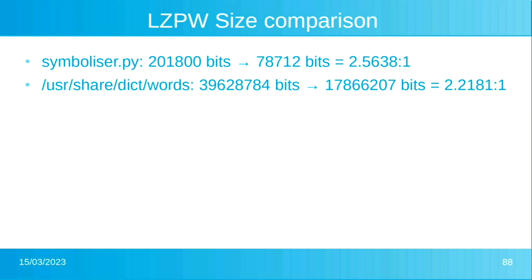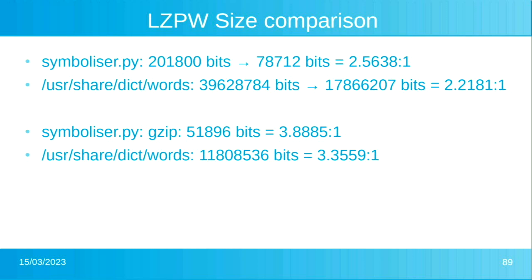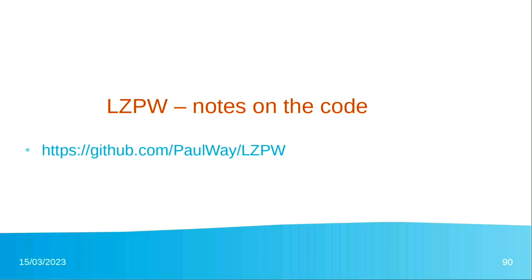So how does this do with more real-world data? I ran this on its own source code and got a compression ratio of about 2.56 to 1. Using shared words compressed slightly less. How does that compare to something as old as Gzip? We've still got work to do — but that's not surprising, because I think there are a lot of improvements we can get. The code is at my GitHub address.